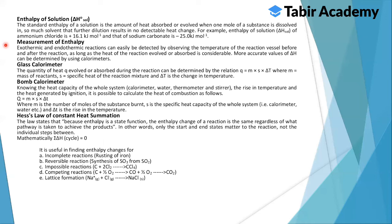Exothermic and endothermic reactions can be detected by observing the temperature of the reaction vessel before and after the reaction. More accurate values of delta H can be determined using calorimeters. The heat evolved or absorbed during the reaction can be determined by the relation: q = m × s × delta T, where m is the mass of reactants, s is the specific heat of the reaction mixture, and delta T is the change in temperature. Knowing the heat capacity of the whole calorimeter system, it is possible to calculate the heat of combustion.